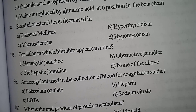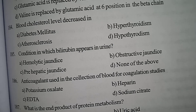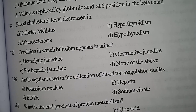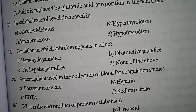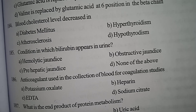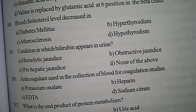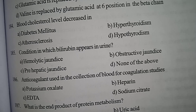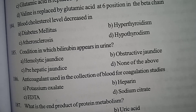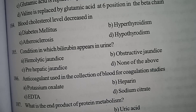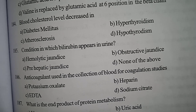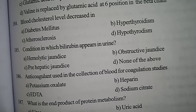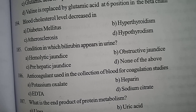Correct answer: Option D — Sodium citrate, which is the light blue cap, used for anticoagulant coagulation studies. Sodium citrate is also used in ESR studies. The anticoagulant to blood ratio in ESR is 1:4, but in coagulation studies the ratio is 1:9.